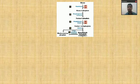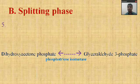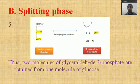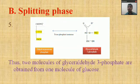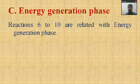In reaction five, there occurs conversion of dihydroxyacetone phosphate into glyceraldehyde-3-phosphate by the enzyme phosphotriose isomerase. It is again a reversible reaction. At the end of the splitting phase — at the end of reaction five — we have two molecules of glyceraldehyde-3-phosphate.